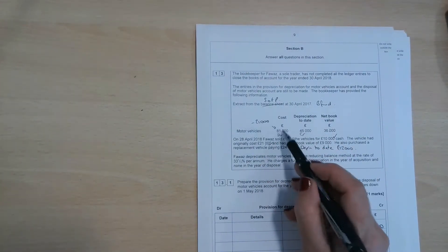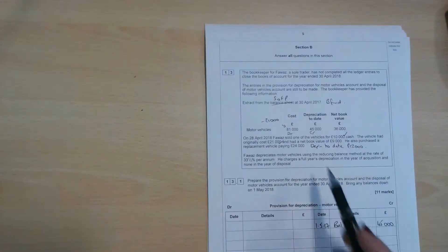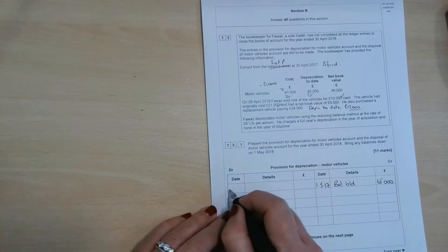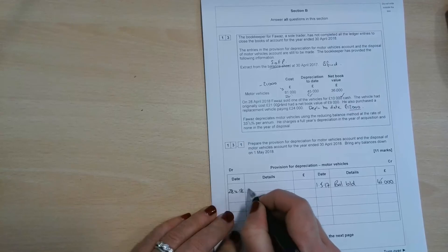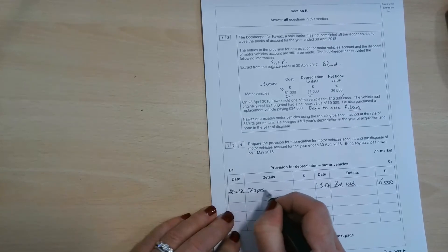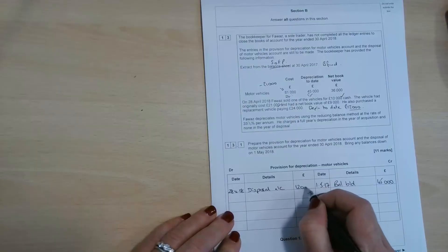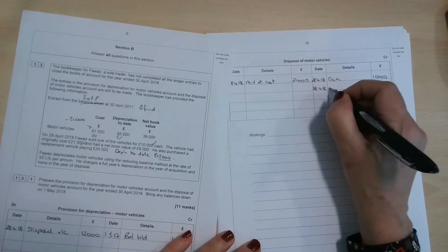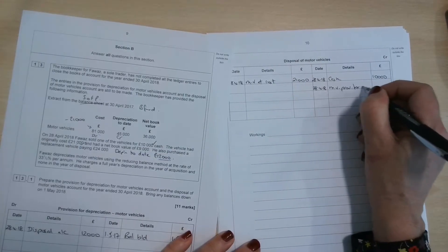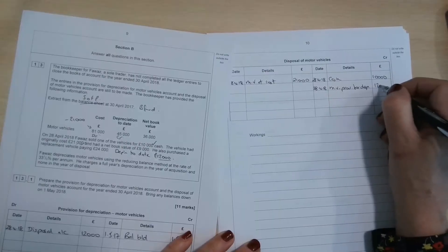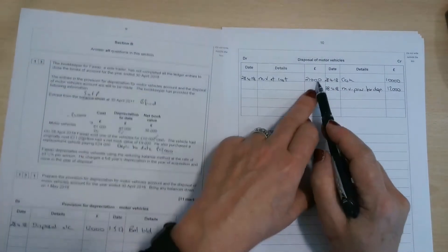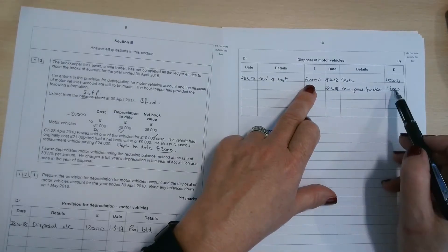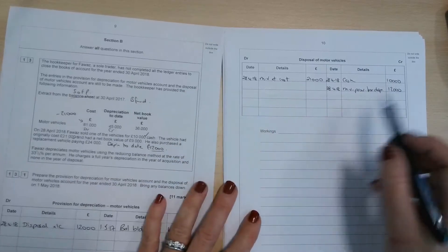So that's dealt with. So we've credited the cost account, debited the disposal account. We also need to get rid of any depreciation. So the £12,000 is included in that £45,000. So on the 28th of April 2018, off to the disposal account, we've got £12,000 worth of depreciation. So the 28th of April 2018, motor vehicle provision for depreciation, £12,000. So now we've got the cost of the vehicle and the provision for depreciation, the difference being the £9,000 net book value.